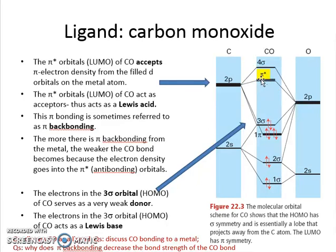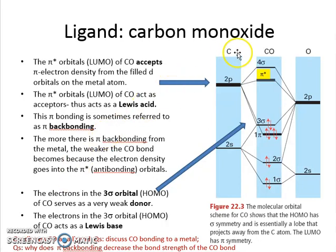Since carbon monoxide is receiving electron density into its pi star orbital, it is weakening the bond. Bond order equals the electrons in bonding orbitals minus the electrons in antibonding orbitals, divided by 2. So the more electrons you put into the pi star orbital, the lower the bond order, which means you are weakening the carbon-oxygen bond. The more the metal center back-donates into the pi star, the weaker the CO bond will become.